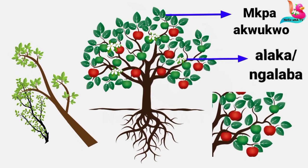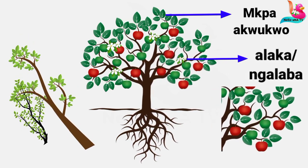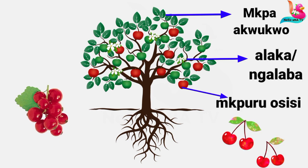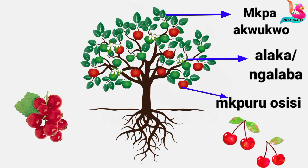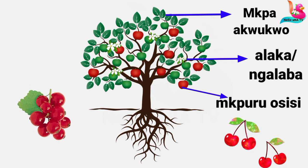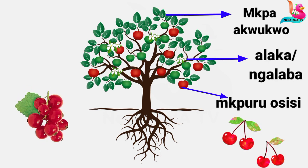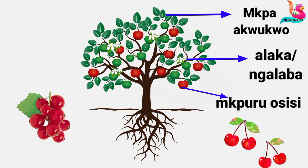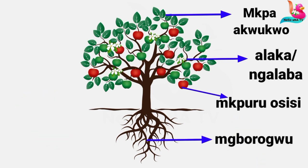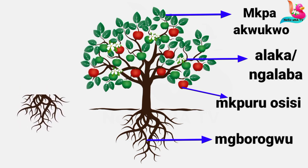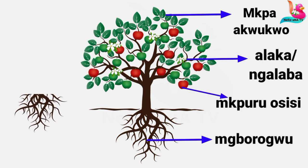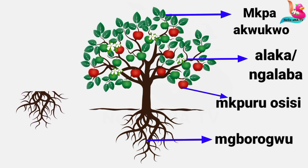Alaka mobo ngalaba — branch. Mburo osisi — fruits. Mburogo. Mburogo-ro-ts.